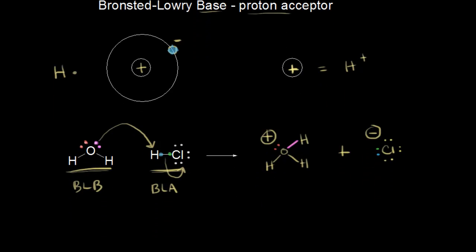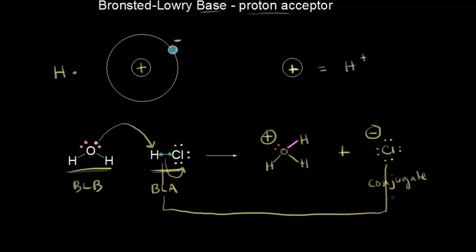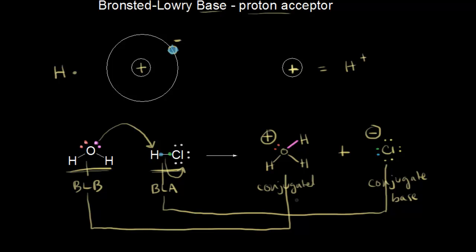Now let's identify the conjugate acid-base pairs. If HCl is our Brønsted-Lowry acid, its conjugate base is the chloride anion, Cl⁻. H₂O was our Brønsted-Lowry base, and its conjugate acid is H₃O⁺. When looking for conjugate acid-base pairs, you're looking for a one-proton difference: H₂O and H₃O⁺ are one pair, and HCl and Cl⁻ are the other.